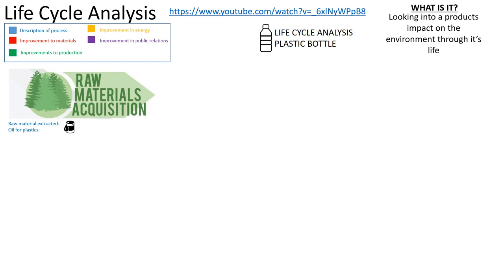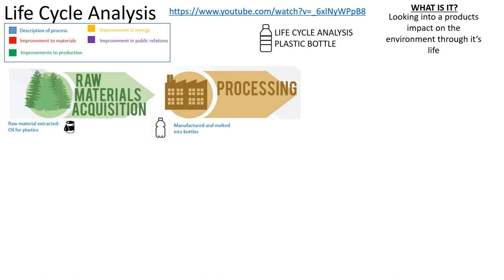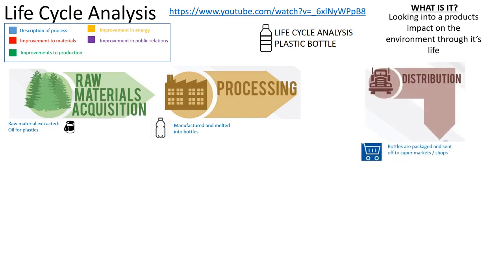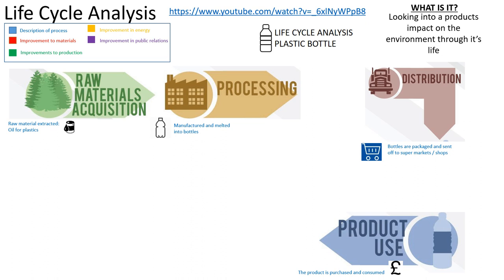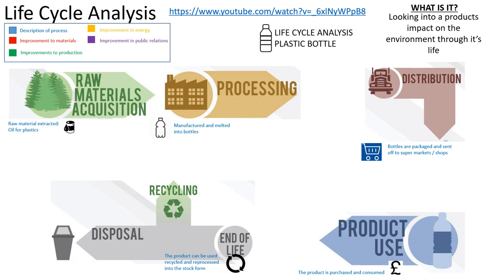First, I'll go through the process. Raw material acquisition: for a plastic bottle, the raw material extracted is oil. The bottle is manufactured — materials are turned into plastic stock forms through blow moulding and made into bottles. Products are then distributed, packaged, and sent off to supermarkets and shops. The product is purchased and consumed.